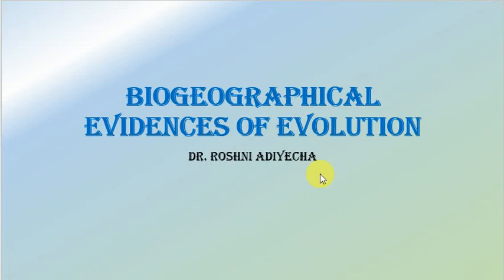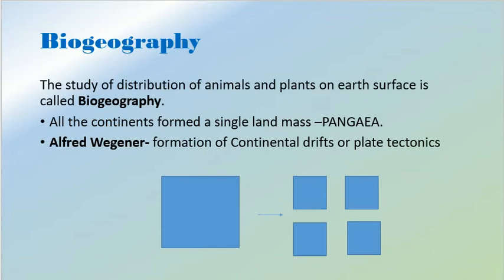In this video lecture, we will study biogeographical evidences of evolution. It was based on the biogeographical distribution. The distribution of animals and plants on earth's surface is called as biogeographical distribution.